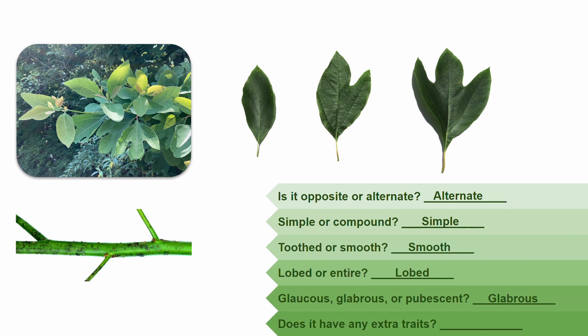Lastly, does this species have any extra traits? It does, but it's one that we haven't talked about yet, so it was a bit of a trick question. Its extra trait is odor. When you crumble the leaf, it releases an odor that is fruity and, to me, smells a whole lot like fruity pebbles. So what plant species is it? It is none other than Sassafras albidum, otherwise known as the sassafras tree.